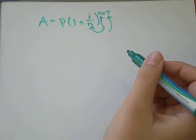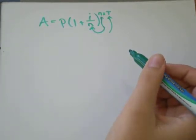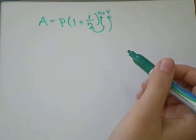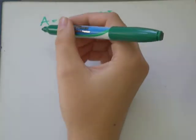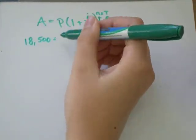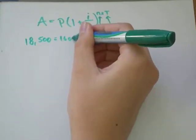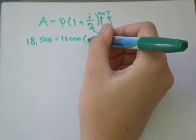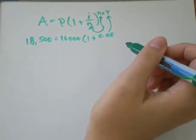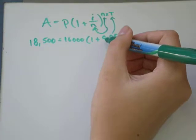First I'm going to write down everything we know and hopefully we'll only be left with one unknown that we can use logarithms to solve for. We know we end up owing $18,500. We started owing $16,000. Interest was 5%, always write it as a decimal, not a percent. So the decimal is 0.05.